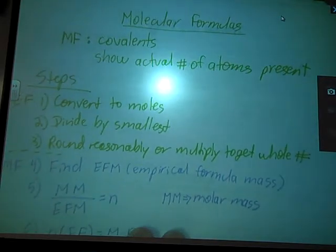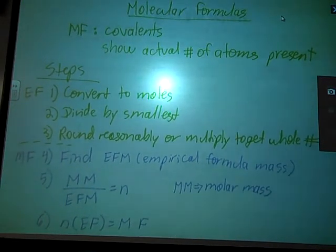The steps are very similar in the beginning. You actually have to find the empirical formula before you can find the molecular formula. As one would expect, first you convert to moles, divide by the smallest, round reasonably, or multiply to get a whole number if you land in that 0.3 to 0.7 range, and that gives you the empirical formula, the smallest number or smallest ratio of atoms present.